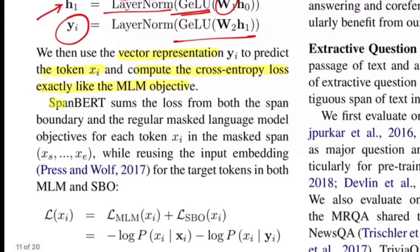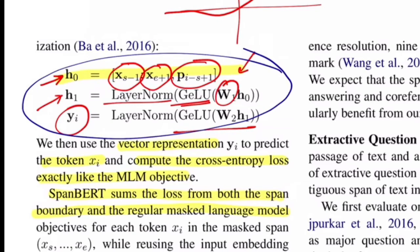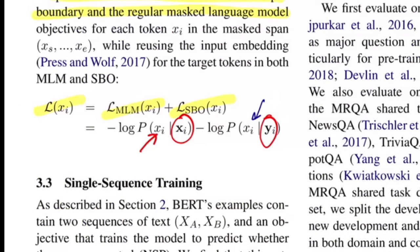Passing through one more layer yields Yi — a vector representation for token Xi — used to compute cross-entropy loss just like the masked language modeling objective. SpanBERT sums the loss from both span boundary and regular masked language modeling. For any Xi, you calculate both loss terms: the MLM term uses the final self-attention representation directly, while the SBO term conditions on Yi from the two-layer neural network.